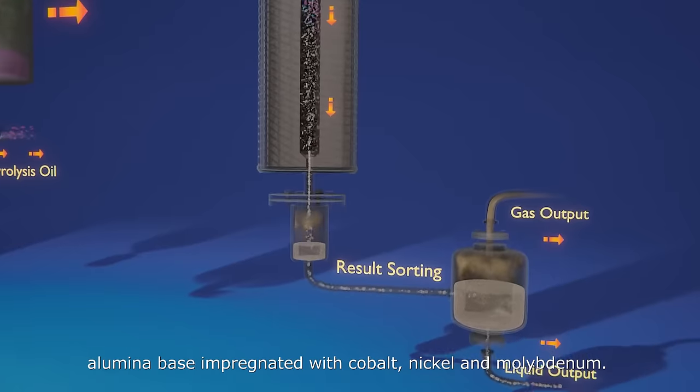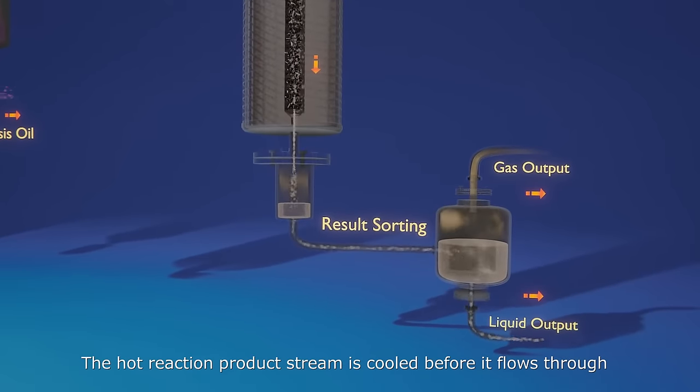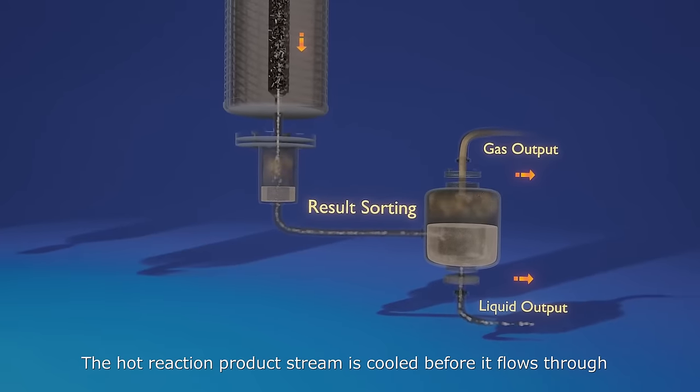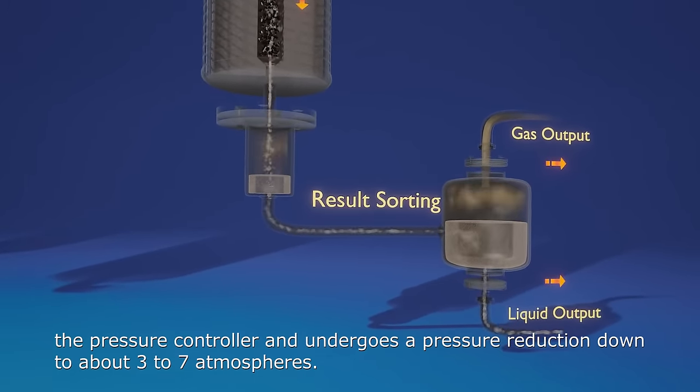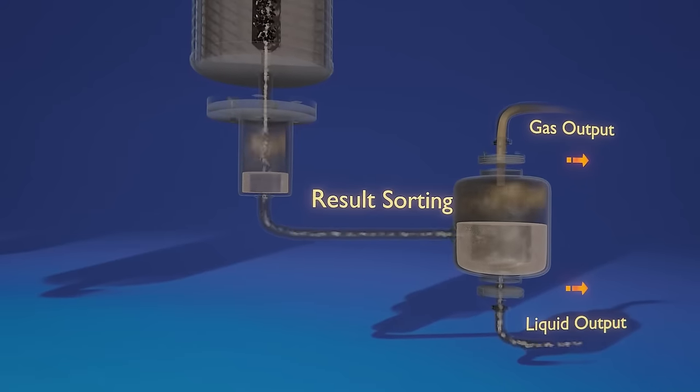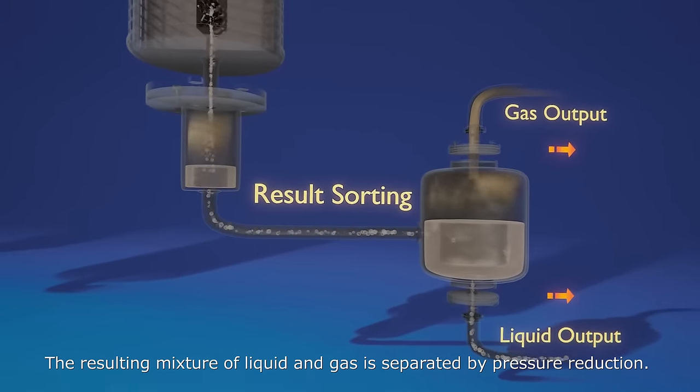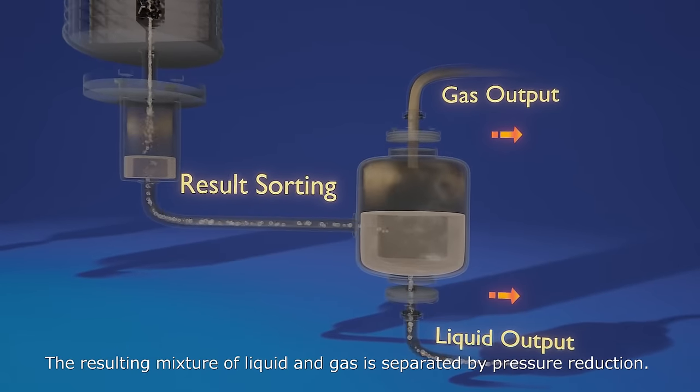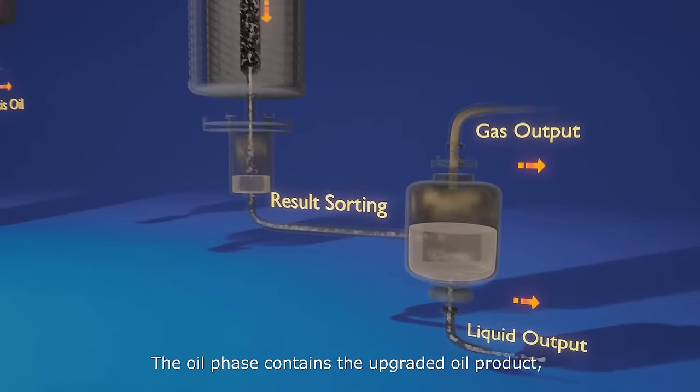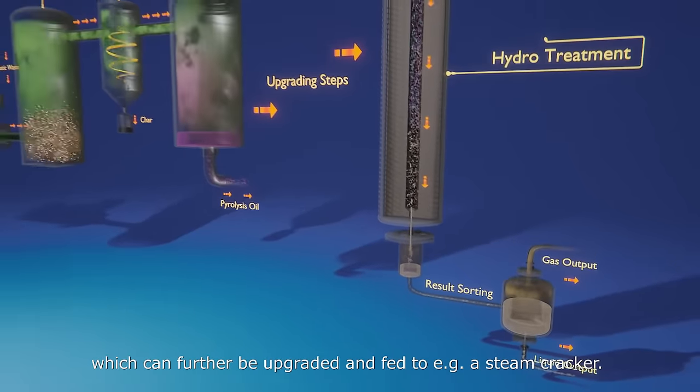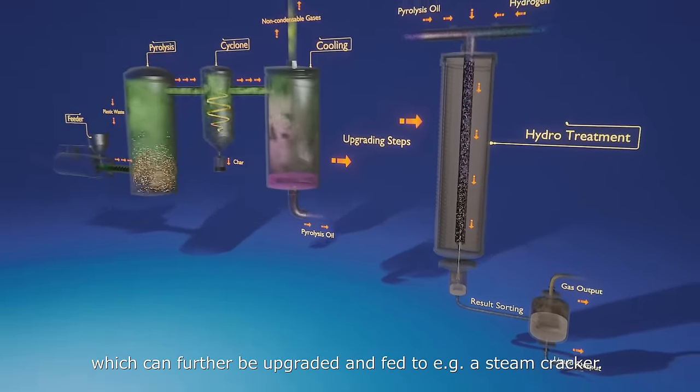The hot reaction product stream is cooled before it flows through the pressure controller and undergoes a pressure reduction down to about 3 to 7 atmospheres. The resulting mixture of liquid and gas is separated by pressure reduction. The oil phase contains the upgraded oil product which can further be upgraded and fed to, for example, a steam cracker.